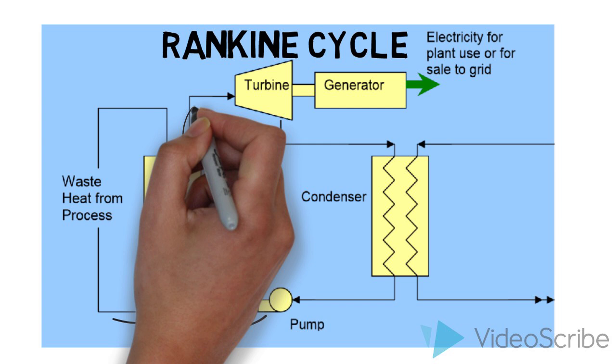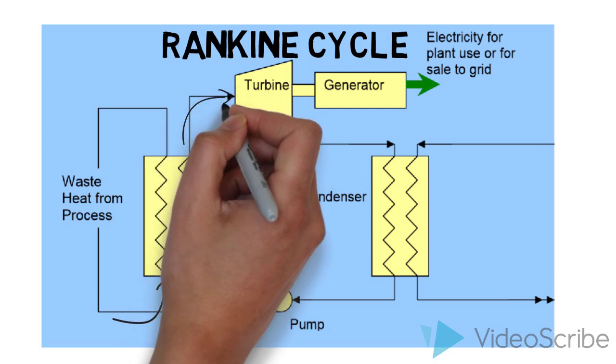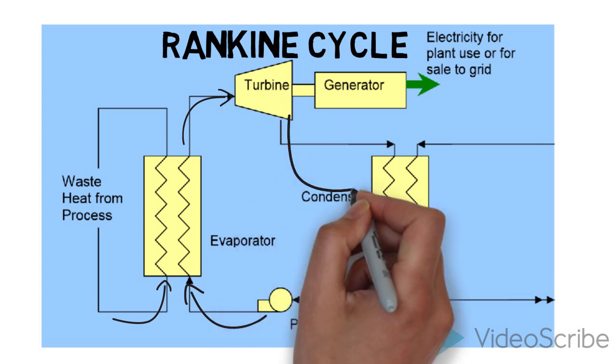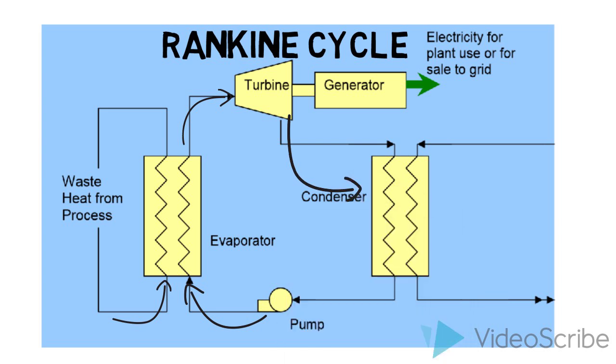The water evaporates into steam. The steam's high pressure allows it to expand through the turbine, generating electricity. The steam is then cycled back into the condenser to be changed back to water.